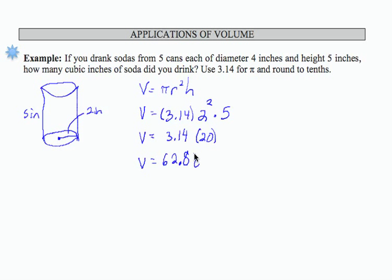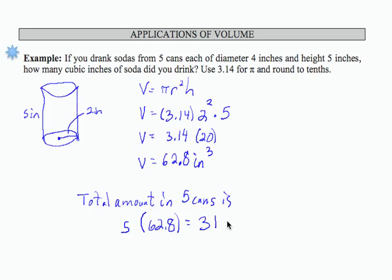So the total amount in five cans is five times 62.8, which is 314.0, since we want to indicate tenths place, and that's going to be cubic inches. So this is how much we drink if we drink five cans of a soda of this size.